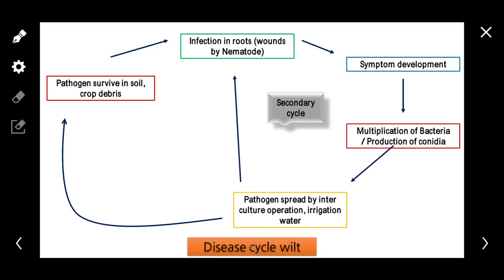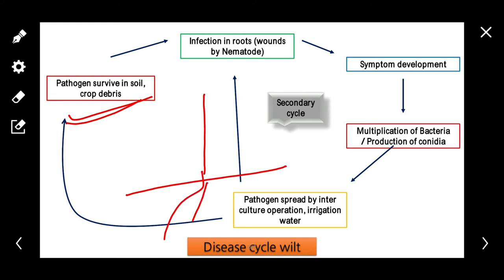Coming to the disease cycle. The pathogen can survive in soil and crop debris. It enters through the roots, moves into the vascular bundles, and multiplies, causing symptoms to develop.